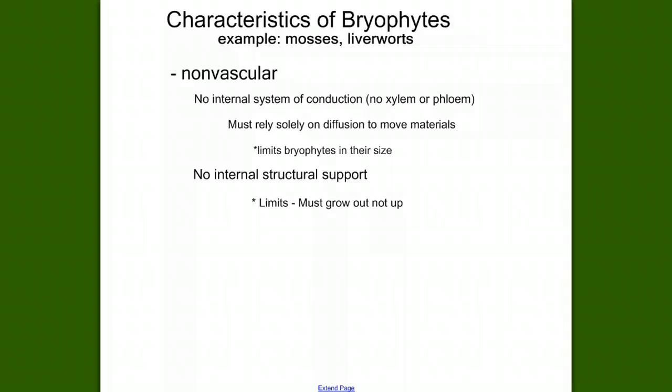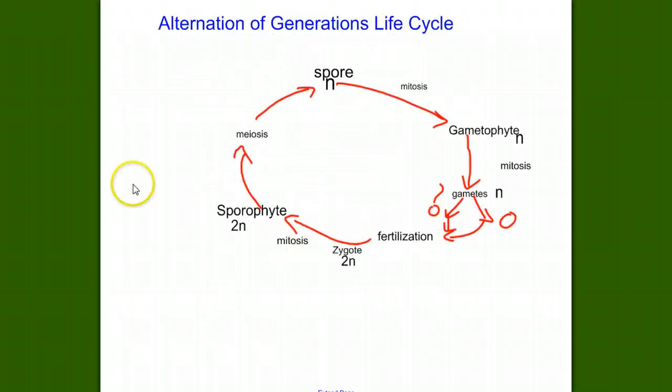Before we look at the other characteristics of bryophytes, let's go through the life cycle of a moss. Remember that all plant life cycles are variations of the generic alternation of generations life cycle that we've seen before. Let's start with a blank page. So, we have this green fuzzy moss on the ground, and we want to see its life cycle.